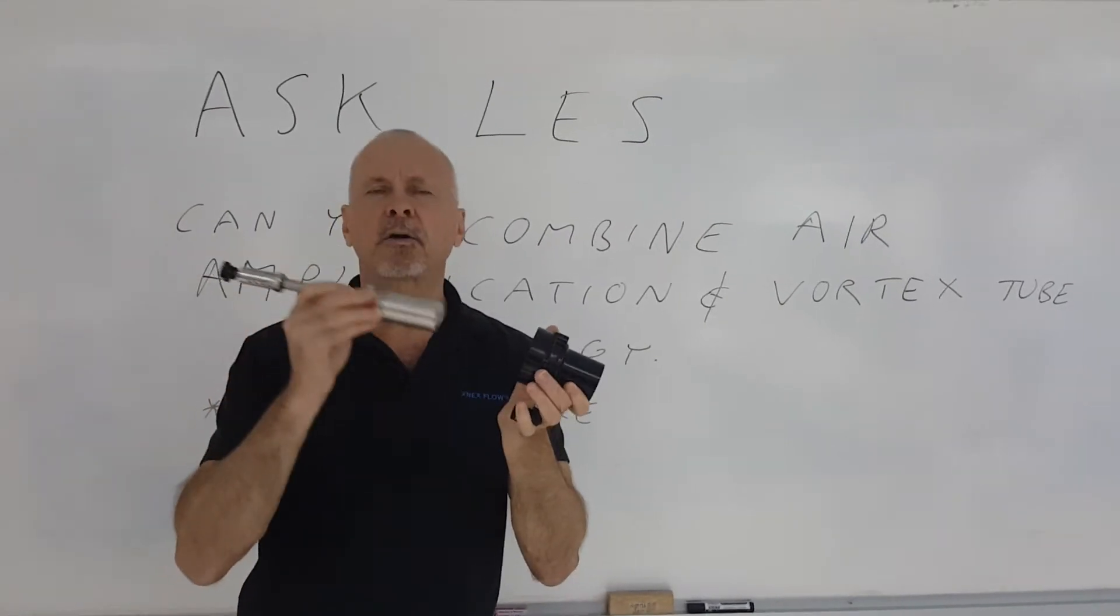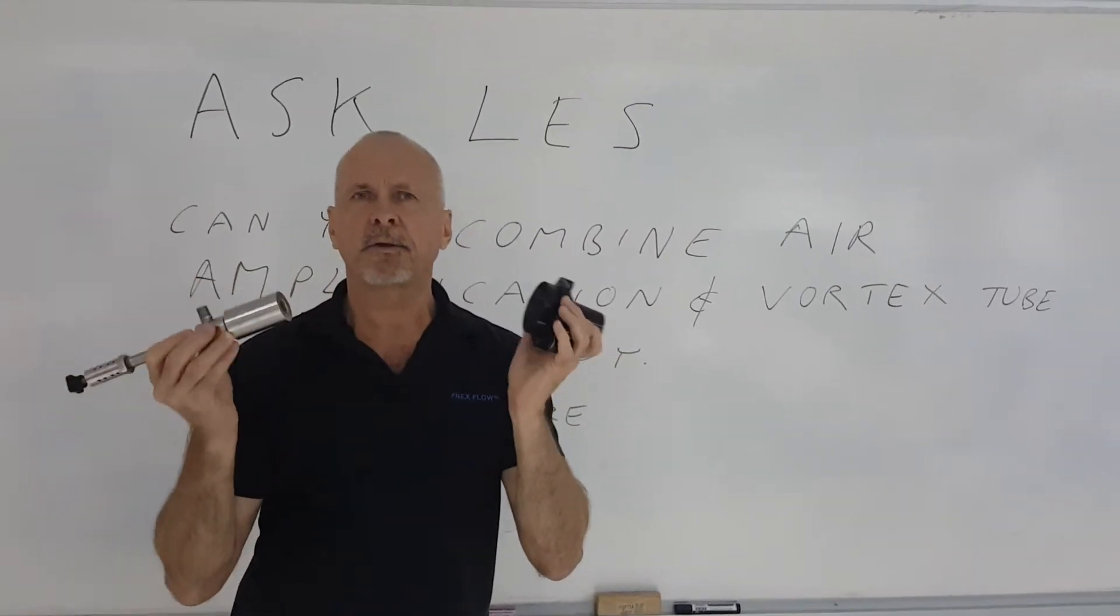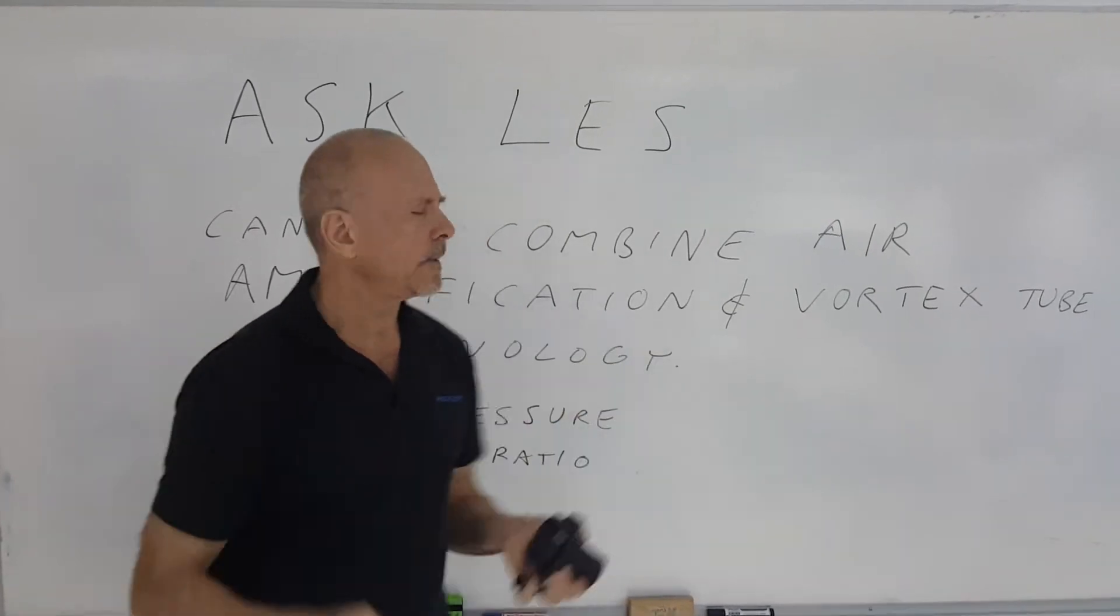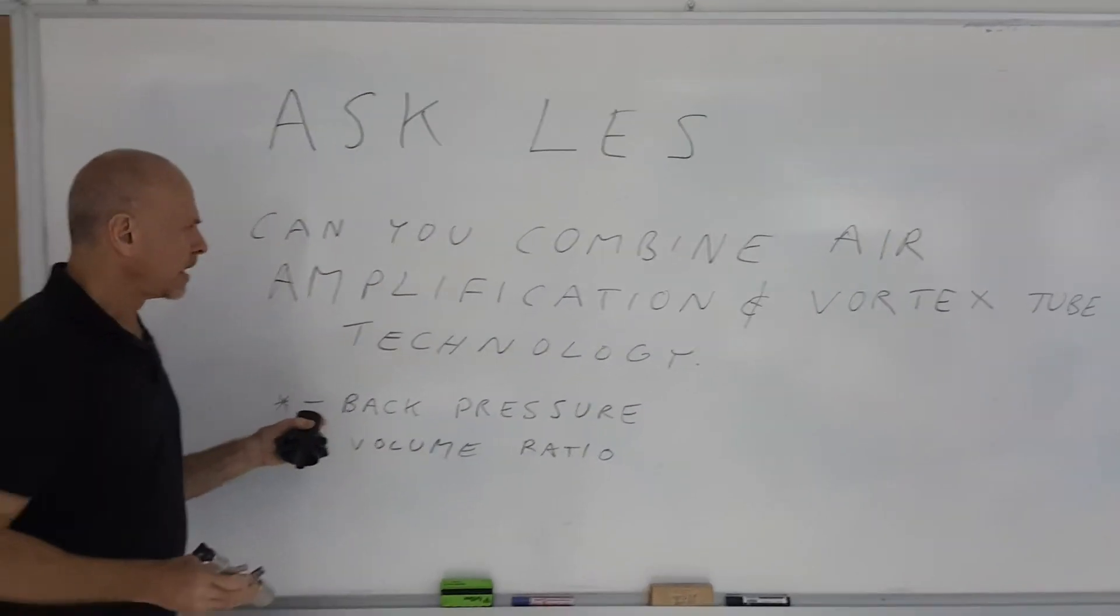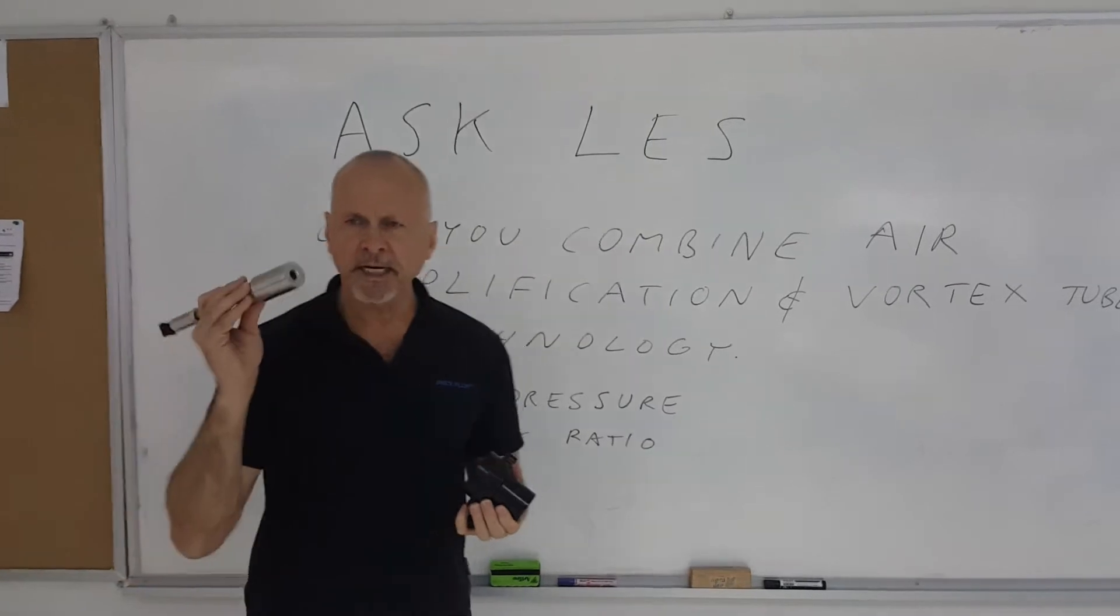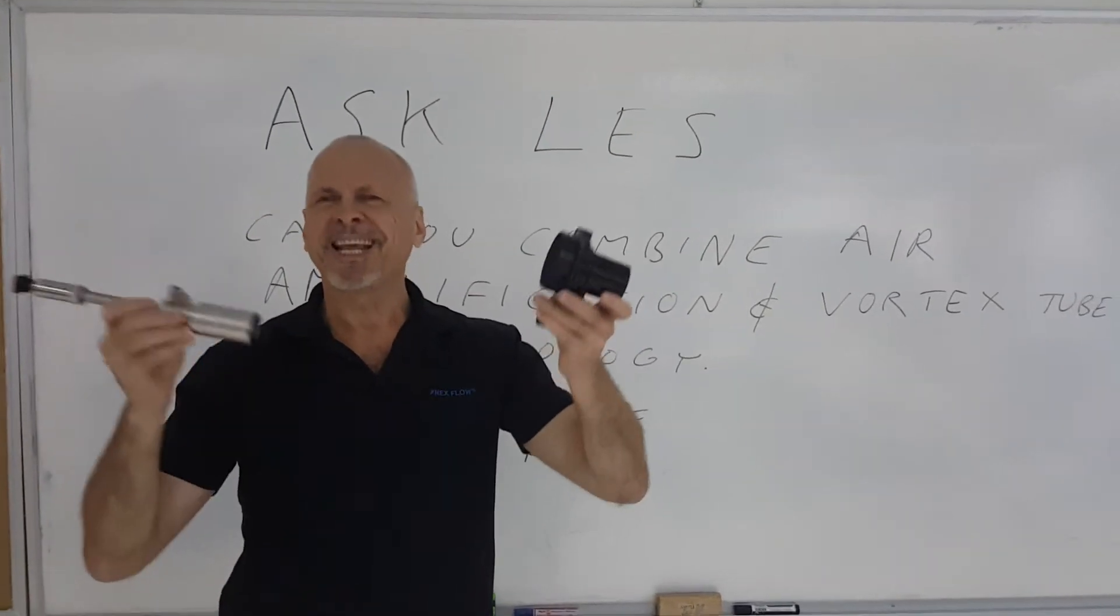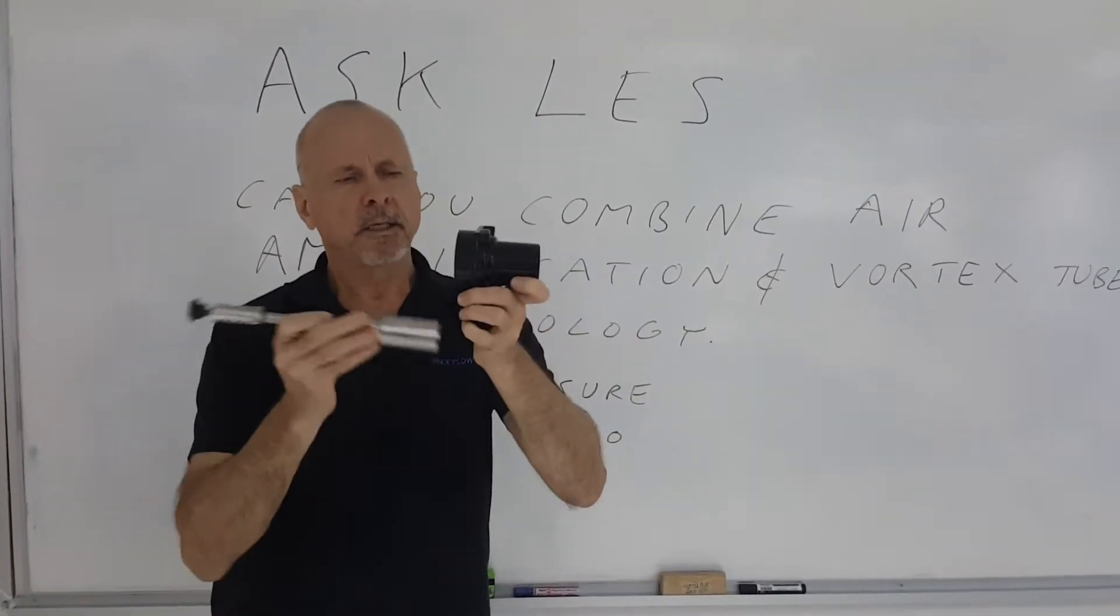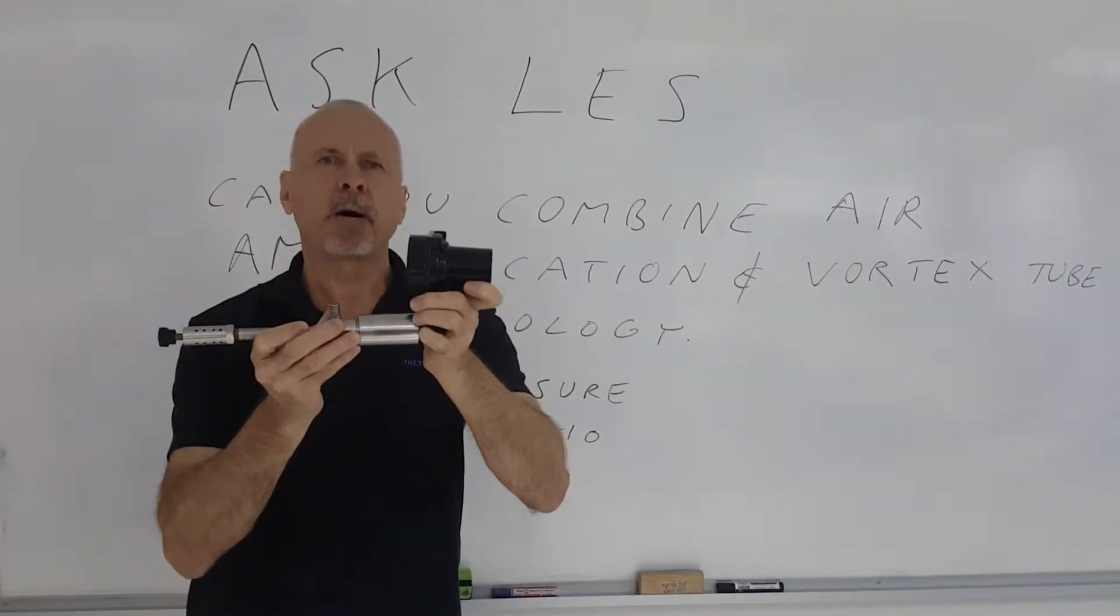Can I combine it with a vortex tube? Generally, you cannot. Here's why: first of all, back pressure. If I take the vortex tube and put it in line—say the compressed air supply goes into the vortex tube and then the cold air is piped directly to power the air amplifier—it just will not work.